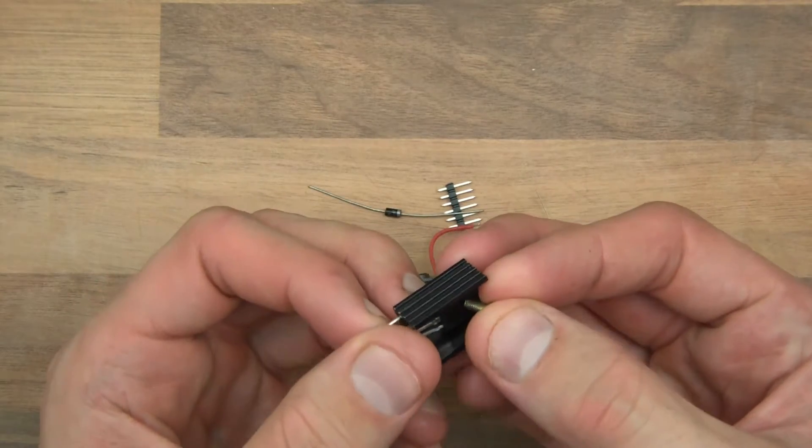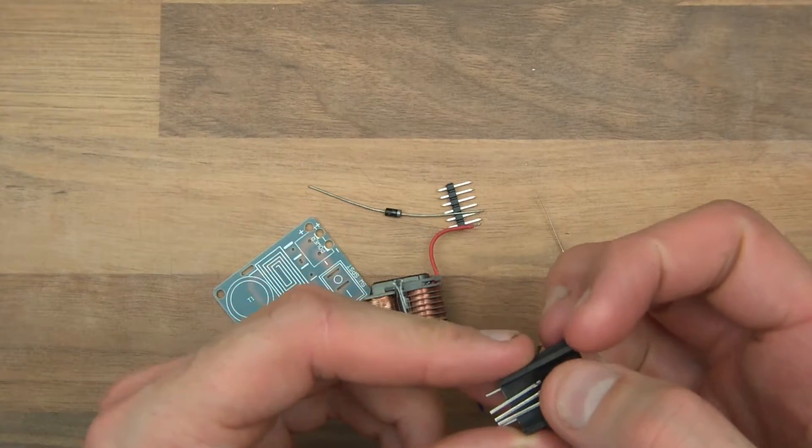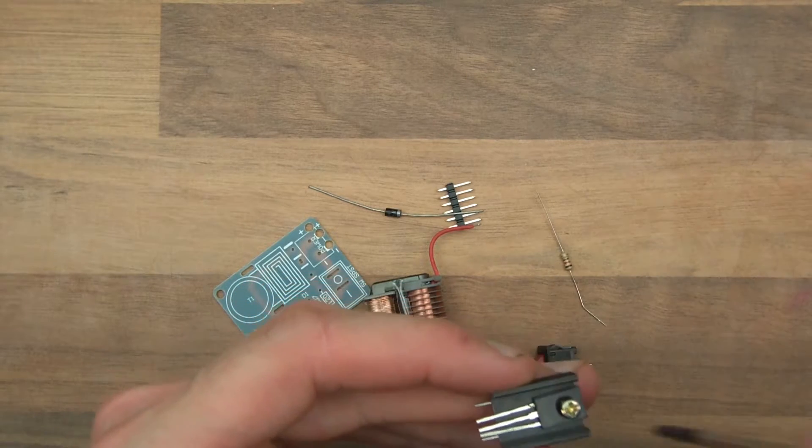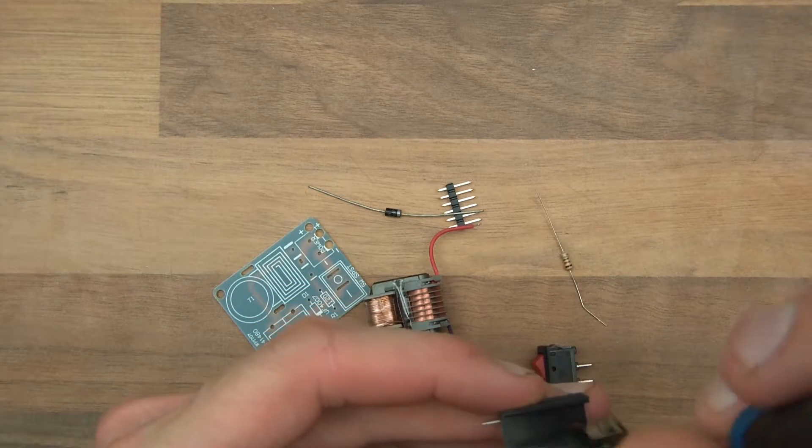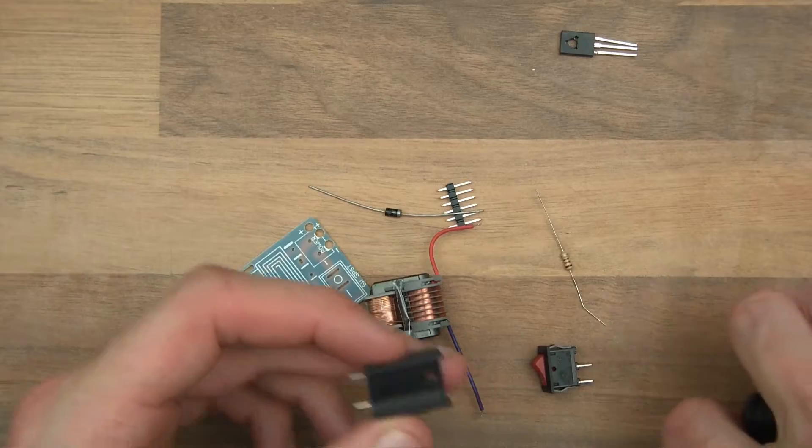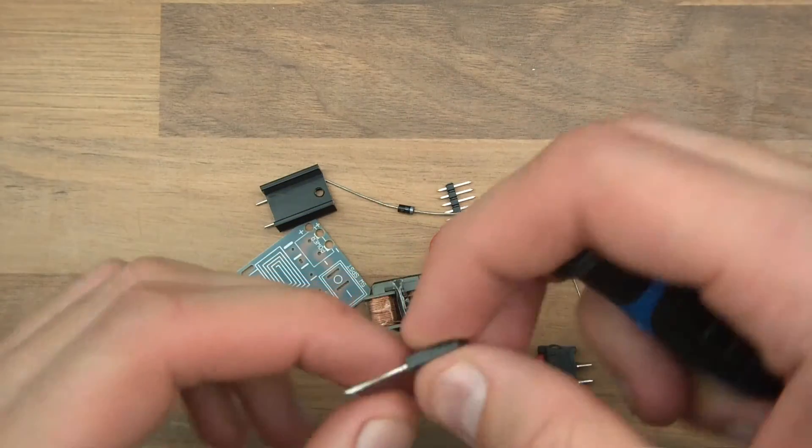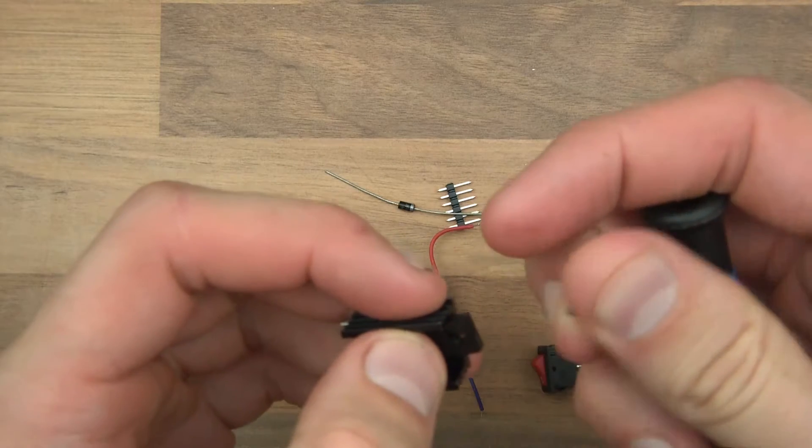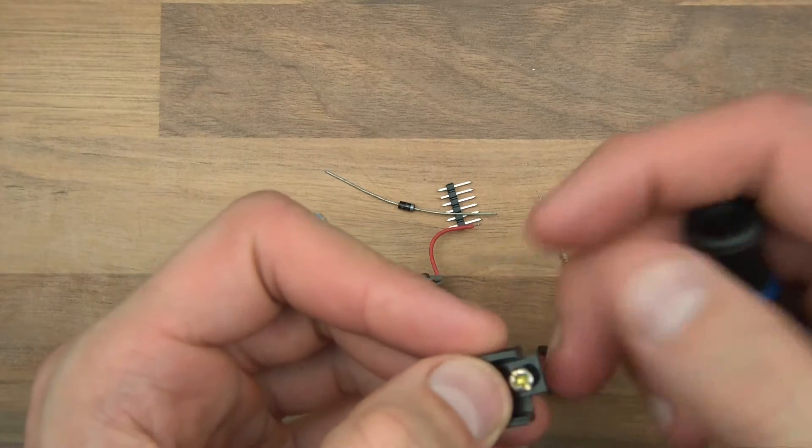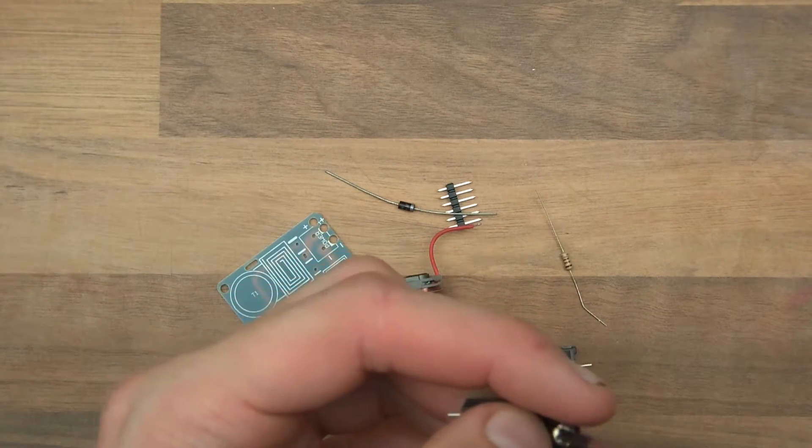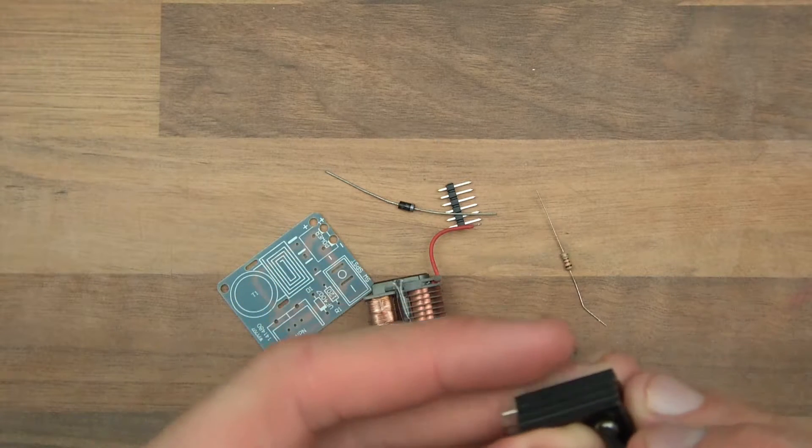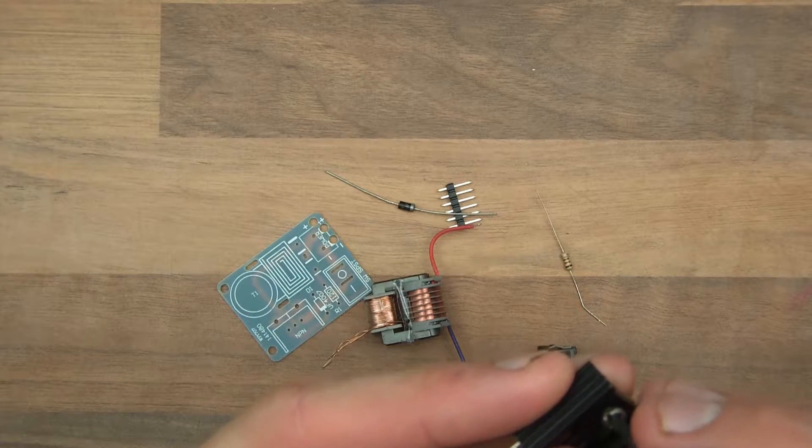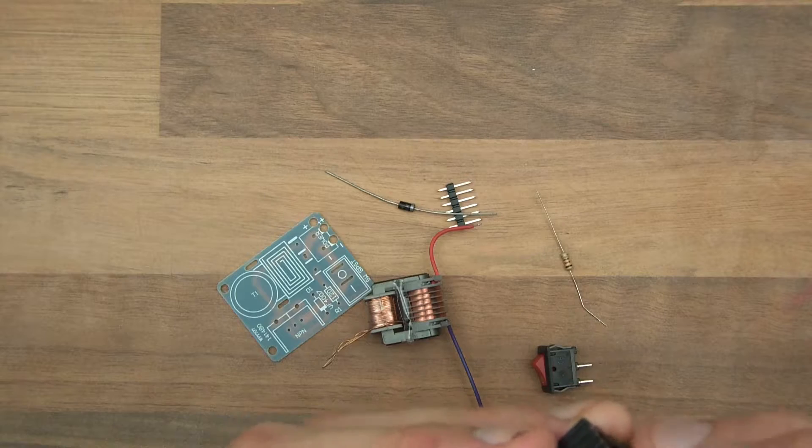This is the transistor. Now I don't know exactly how this thing works, I'll admit, but what I do know is that it's going to give 15 kilovolts out with 3.7 volts in. So however it works it's very impressive. Can I get that in there? There we go.